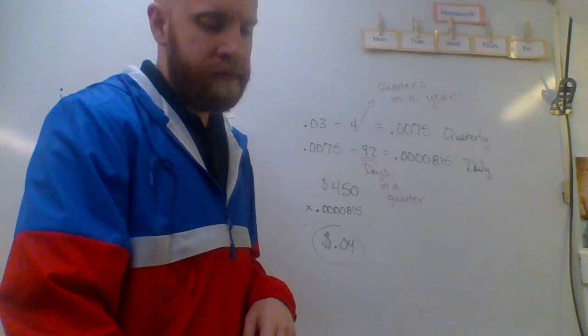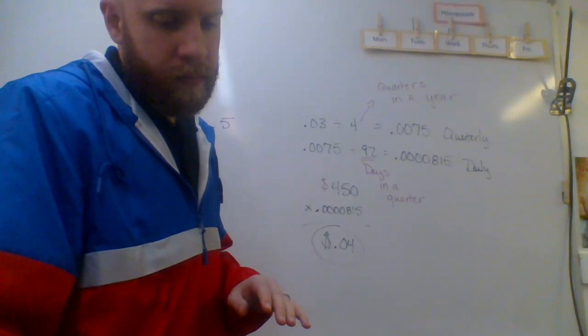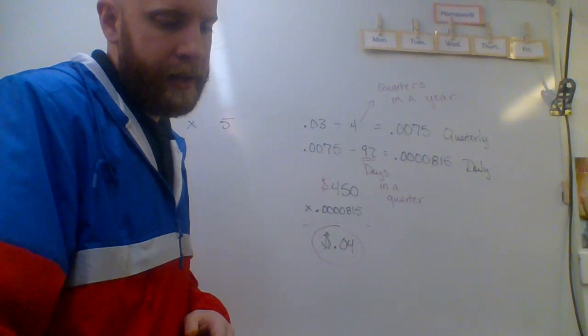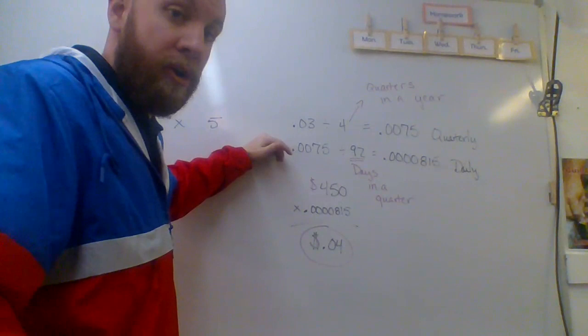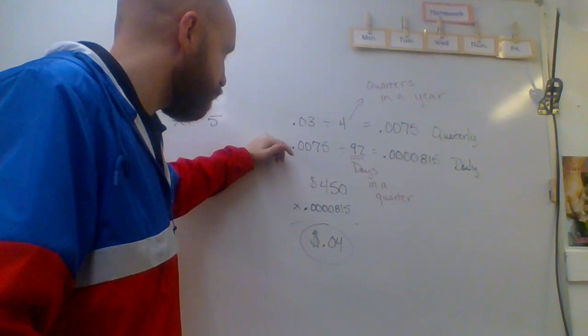But for right now, we're looking at this. So we want to first find our quarterly interest rate. You'll see that in model problem two, letter A. How do we do that? Well, let's look at the problem up here on the board, okay? 0.03 is our 3% interest rate. Now, we understand that quarterly speaking, there are four quarters in a year. That makes sense since quarter means one-fourth.